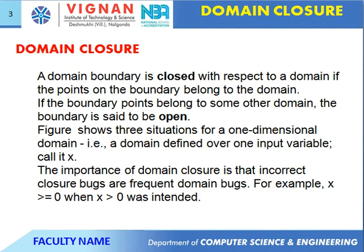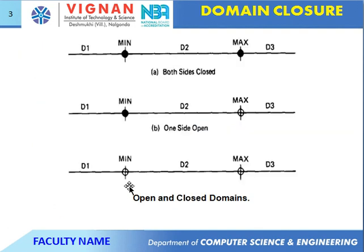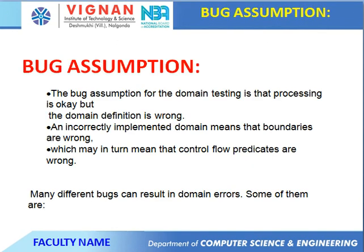For example, X greater than or equal to 0 when X greater than 0 was intended. These are the three different categories of domain closure: one is the minimum closure and maximum closure, both sides closed. Another one is one side open and another side closed. These are the minimum and maximum closure, next one is both sides open.